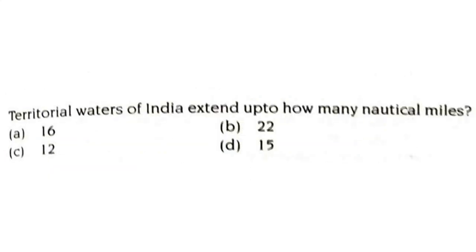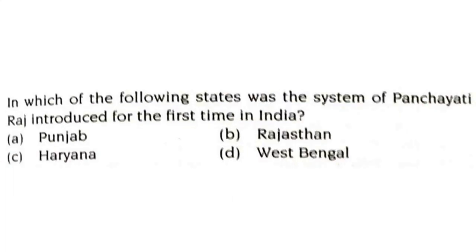The territorial waters of India extend up to how many nautical miles — 16, 22, 12, or 15? The territorial waters of India extend up to 12 nautical miles. In which state was the system of Panchayati Raj introduced for the first time in India? It is Rajasthan — in October 1959, Panchayati Raj was introduced in Rajasthan for the first time in India.